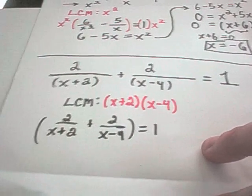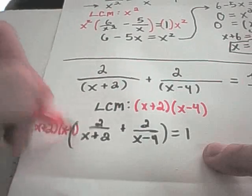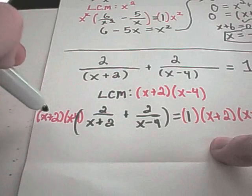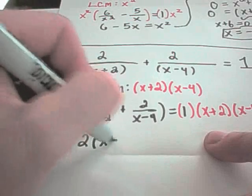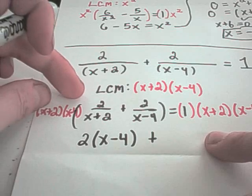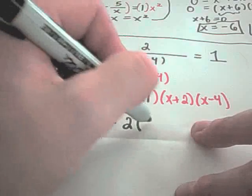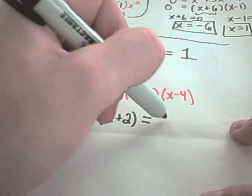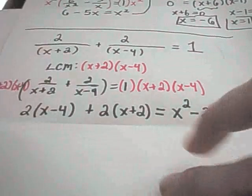Multiplying the left side by x plus 2 times x minus 4, the x plus 2's cancel leaving 2 times x minus 4, and the x minus 4's cancel leaving 2 times x plus 2. On the right side I have x plus 2 times x minus 4, which I'll foil out to get x squared minus 2x minus 8.